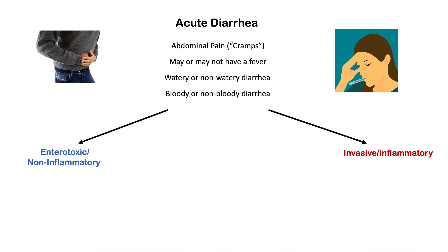With regards to the enterotoxic category, the pathogenic mechanism usually involves malabsorption of nutrients and/or ions, or an efflux of ions into the gastrointestinal lumen. There's usually a toxin associated with the infectious cause, leading to an efflux of ions — usually chloride ions — into the GI lumen, which draws water out of gastrointestinal cells, leading to watery diarrhea.